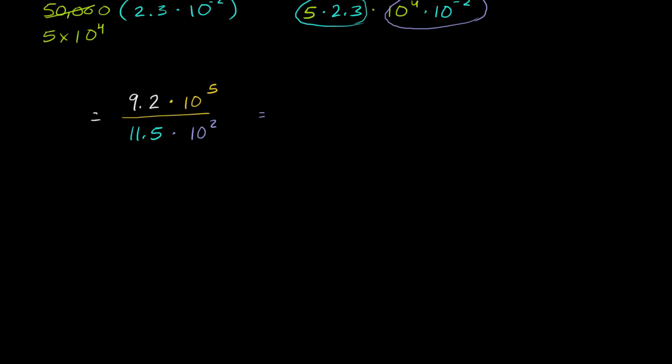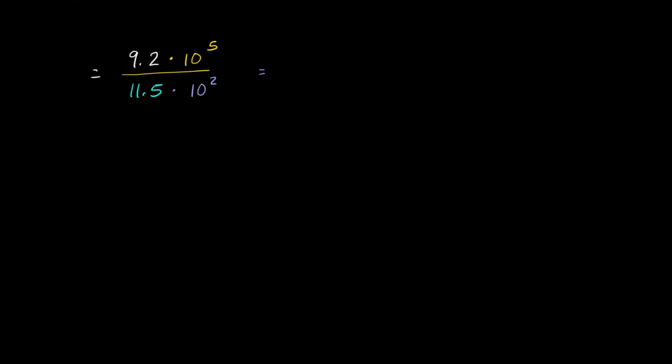So 9.2 divided by 11.5. Well, if we multiply both of these times 10, that's the exact same thing as 92 divided by 115. We essentially move the decimal to the right for both of them. And let me add some zeros here. 115 doesn't go into 9, doesn't go into 92. It does go into 920. And I'm eyeballing that it will go 8 times. 8 times 5 is 40, 8 times 11 is 88, and then 88 plus 4 is 92. It went in exactly. So 9.2 divided by 11.5 simplified to 0.8.